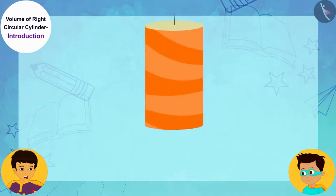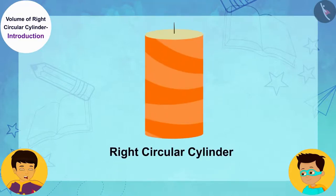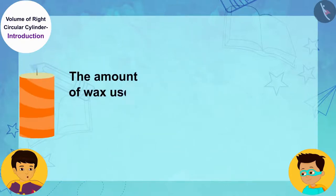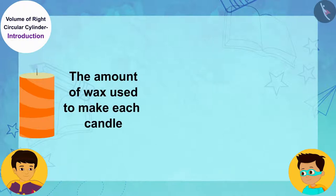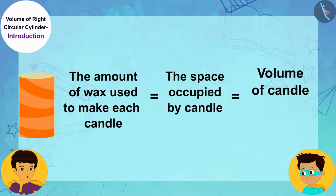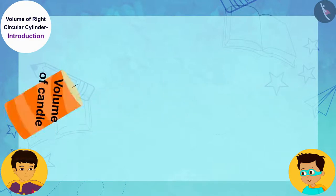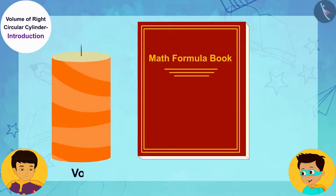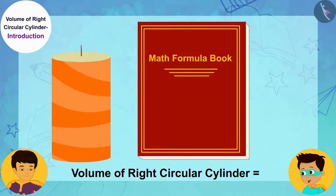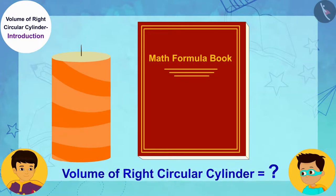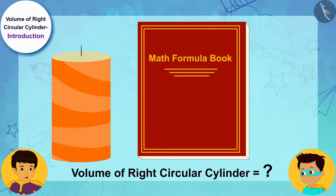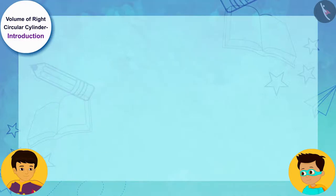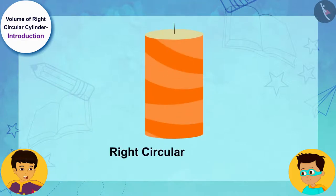Each candle is a right circular cylinder. The amount of wax used to make each candle will be equal to the space it occupies, that is, its volume. In the previous standard we learned the formula for the volume of a right circular cylinder, but we don't remember it now. We can find it again.